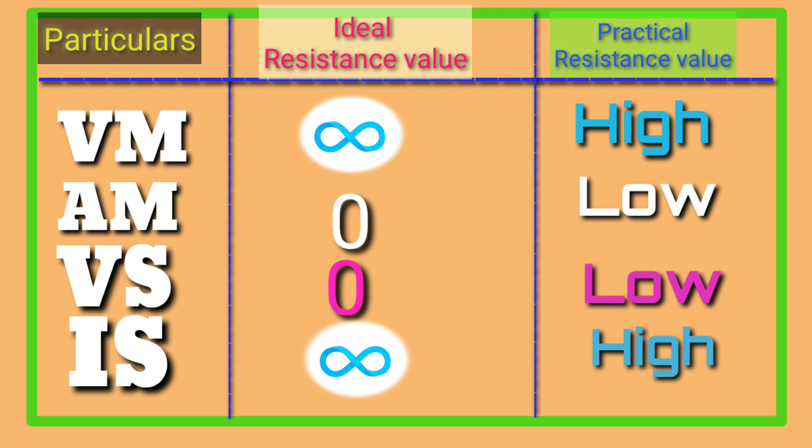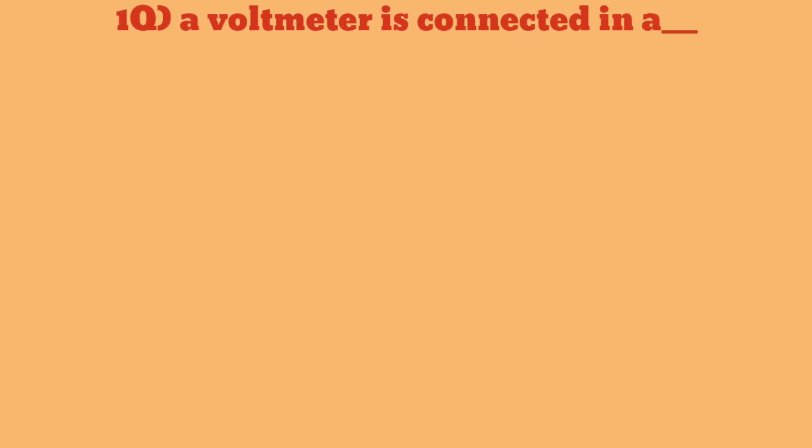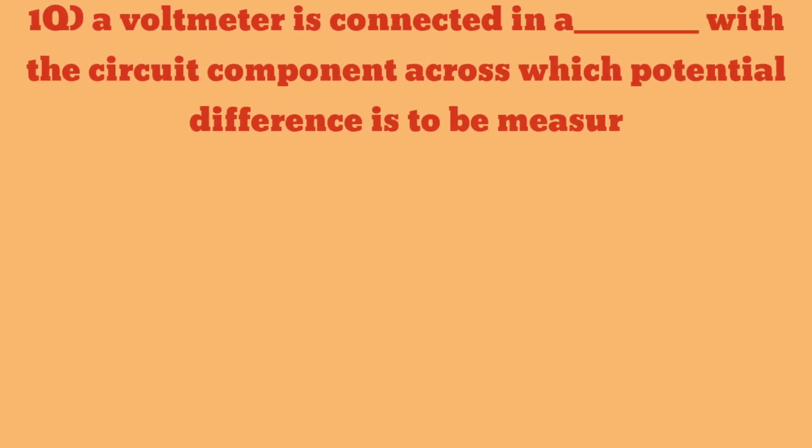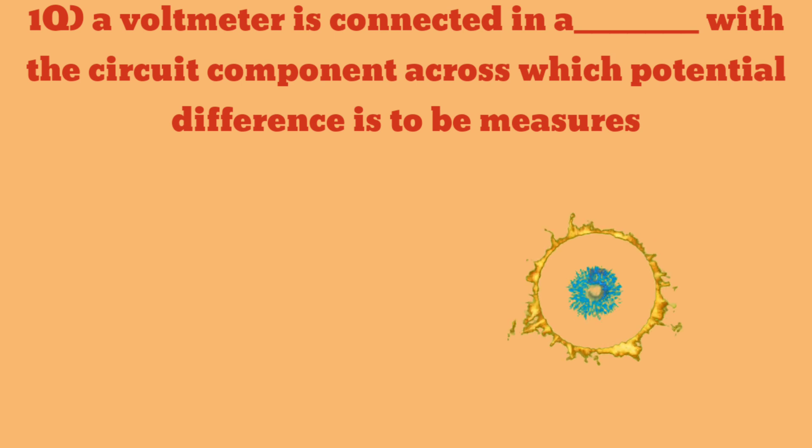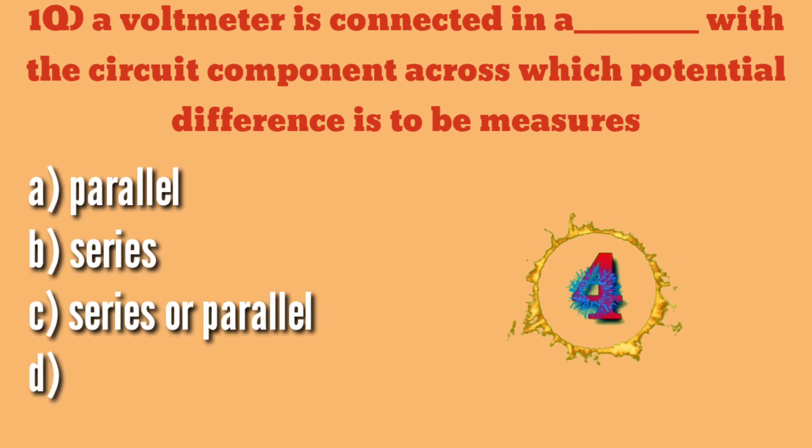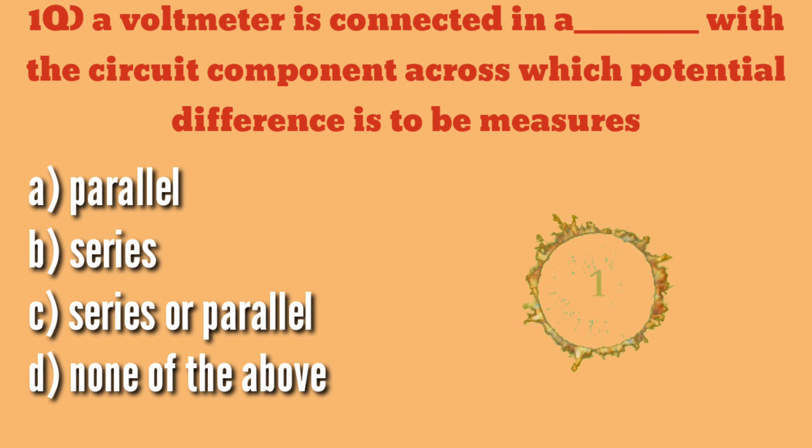Next we will see some important objective bits regarding these two concepts. Question number one: A voltmeter is connected in dash with the circuit component across which potential difference is to be measured. A) parallel, B) series, C) series or parallel, D) none of the above. The answer is A) parallel.